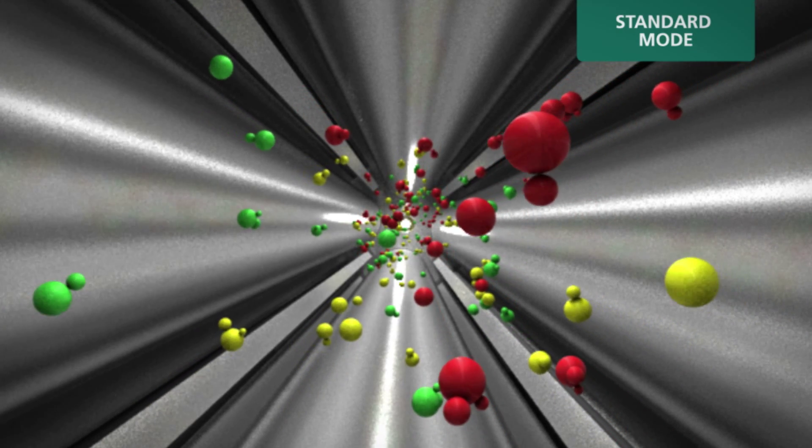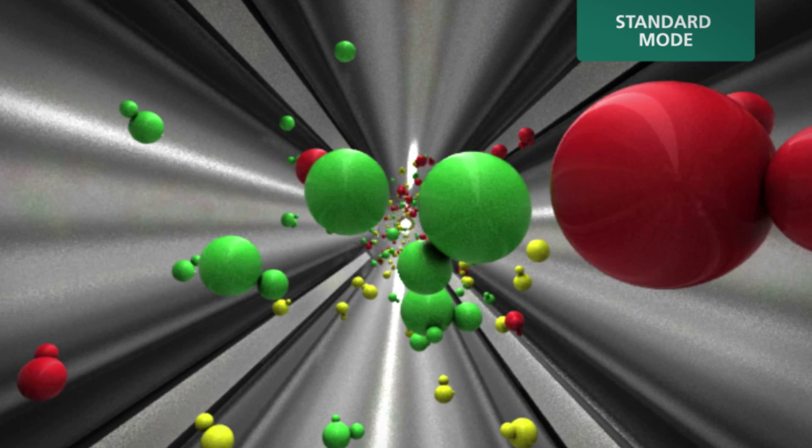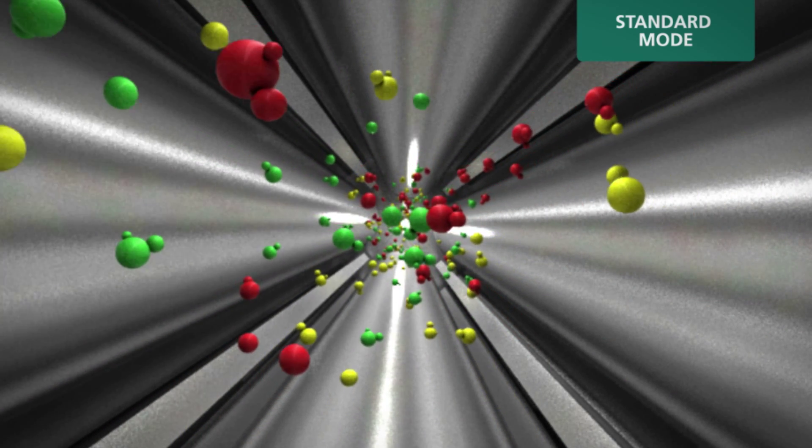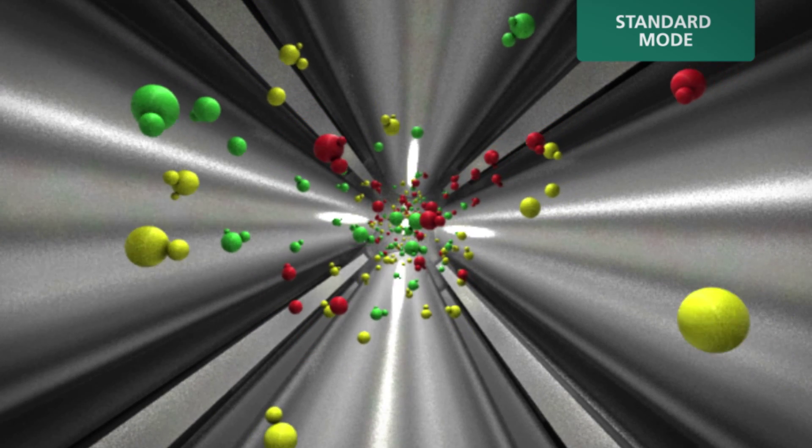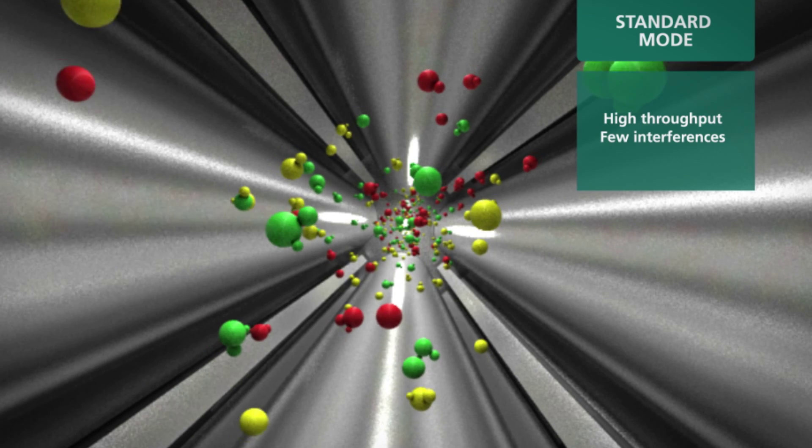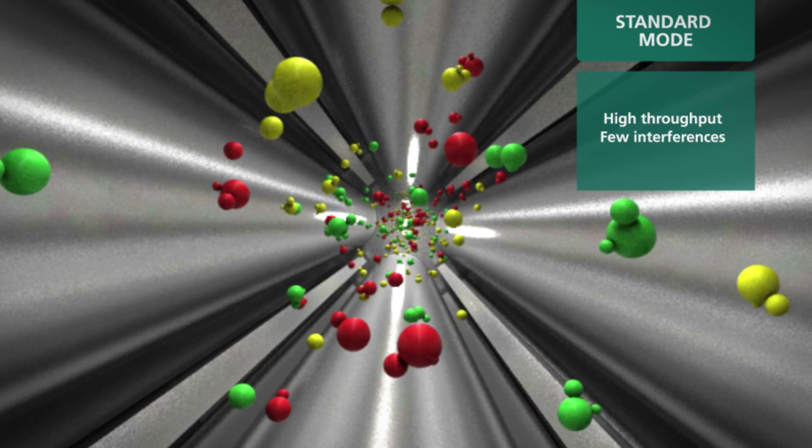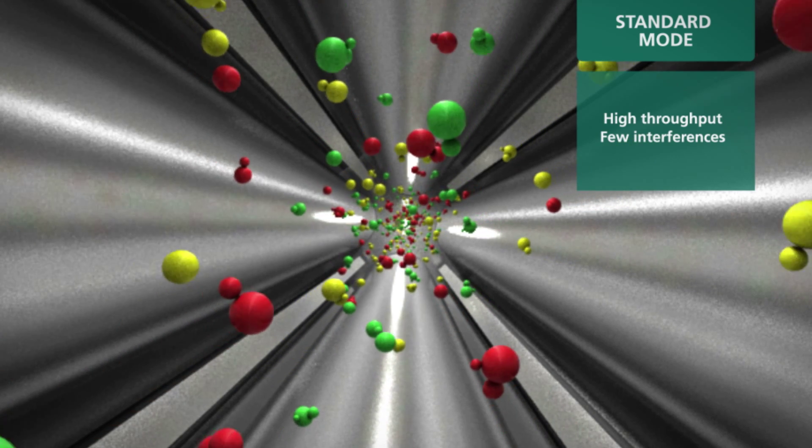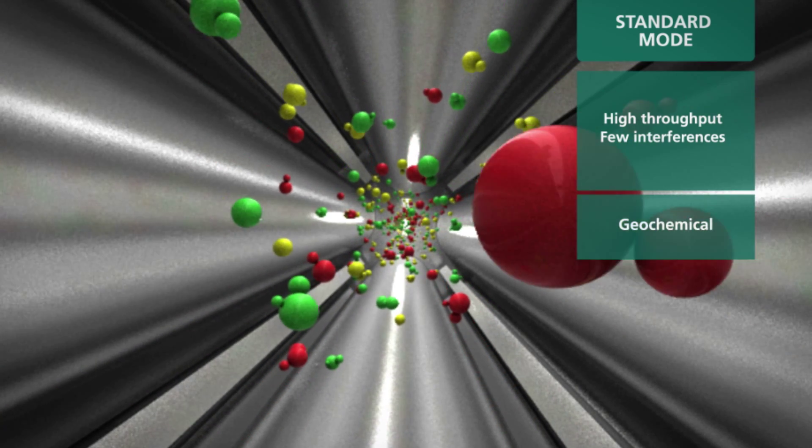In standard mode, the cell gases are turned off and the Nexion 300 ICP-MS operates like a traditional non-cell instrument. Ideal for many routine applications that have few interferences and do not require collision or reaction mode capabilities, standard mode offers excellent low mass sensitivity, making it particularly popular in geochemical laboratories.